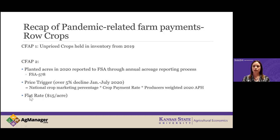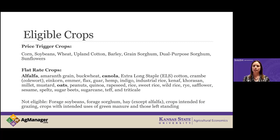Commodities were lumped into two different categories for CFAP 2. The first was the price trigger category — any commodities that experienced a 5% price loss between January and July used a formula payment rate: the proportion of the crop marketed times the crop payment rate times the producer's APH. Corn, soybeans, wheat, and sorghum had that formula payment rate. Then there were crops in the flat rate category that received a straight $15 per acre. You really cannot make changes to what you reported on your FSA form — what was on your approved CFAP 2 application is what you'll receive the top-up payment on.